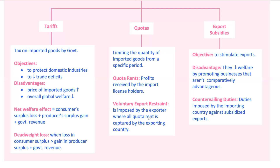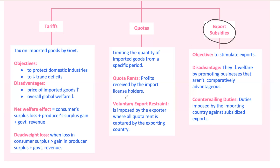Export subsidies are meant to boost exports. However, they can disrupt the natural flow of trade and production, reducing overall welfare. Sometimes importing countries fight back with countervailing duties, which are extra tariffs on subsidized goods. For small countries, export subsidies raise domestic prices and hurt welfare. For large countries, subsidies can lower global prices and transfer some benefits abroad, making the welfare hit even worse. To sum up: tariffs and import quotas decrease national welfare in small countries but might increase it in large ones, while export subsidies and VERs generally reduce welfare.